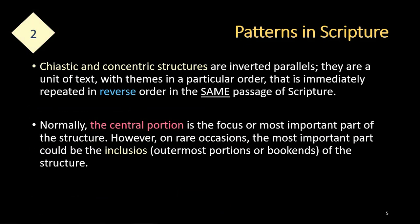Chiastic and concentric structures are inverted parallels. They are a unit of text with themes in a particular order that is immediately repeated in reverse order in the same passage of scripture. Normally the central portion is the focus or the most important part of the structure. However, on rare occasions the most important part could be the inclusios, which are the outermost portions or the bookends of the structure.